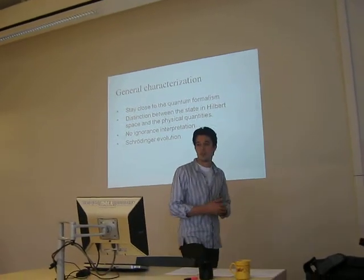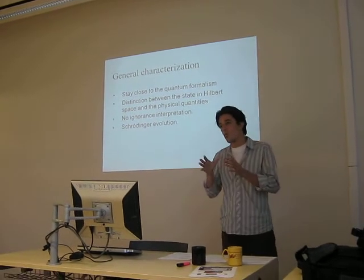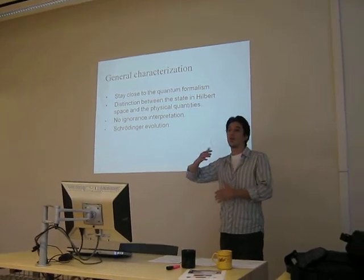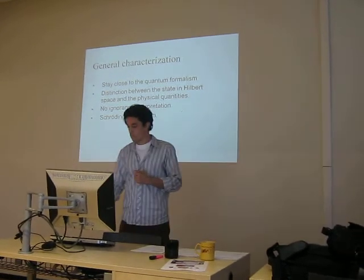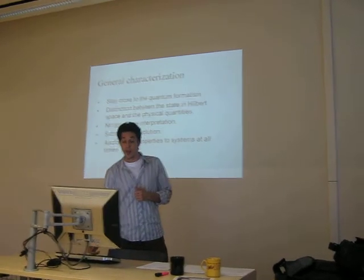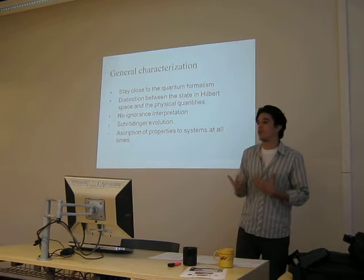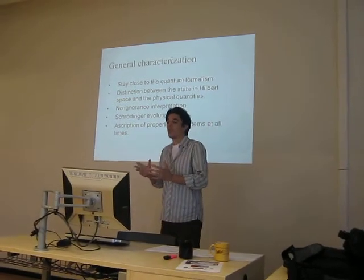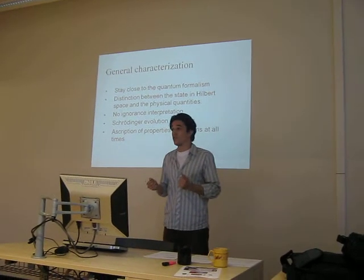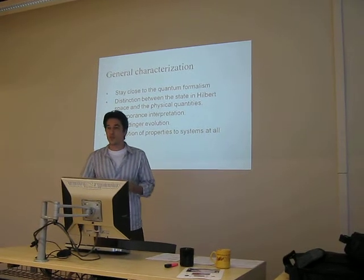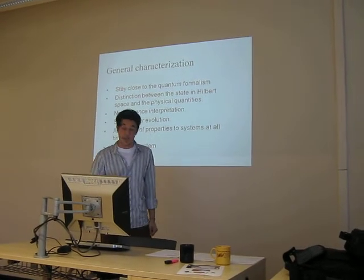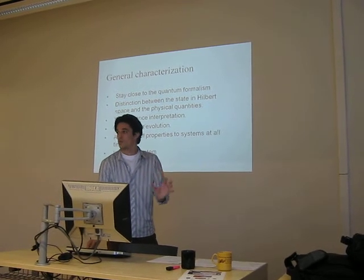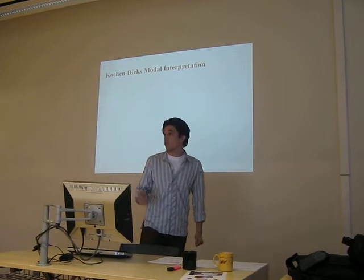It is a non-collapse interpretation. We stick to the Schrödinger evolution of the state — it continues through time. The shift between possible and actual is just a kind of interpretation of that evolution. This is the point where the realistic flavor appears, which is the description of properties to systems at all times. That is the point which raises most of the problems, because of the impossibility to define these descriptions directly in quantum mechanics. And it talks about individual systems — it is not an ensemble interpretation. We want to talk about systems and discuss superpositions, not in terms of ensembles.